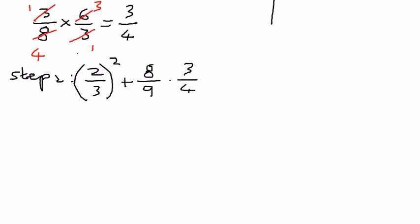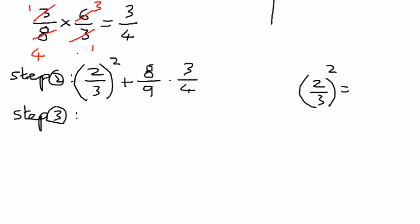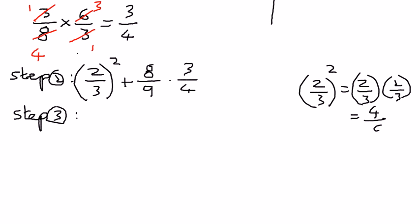In step 3, we simplify the exponent. We have 2 over 3 raised to the power of 2. The base 2 over 3 is repeated 2 times, so we multiply the numerators and denominators: 2 times 2 is 4, and 3 times 3 is 9. Therefore, 2 over 3 to the power of 2 equals 4 over 9. We can now write the expression as 4 over 9 plus 8 over 9 times 3 over 4.